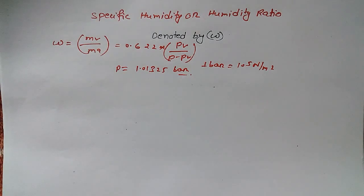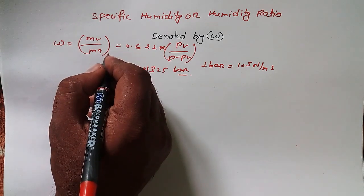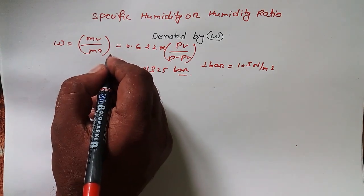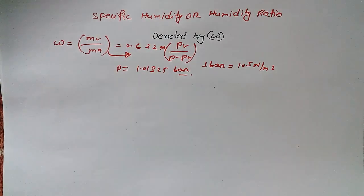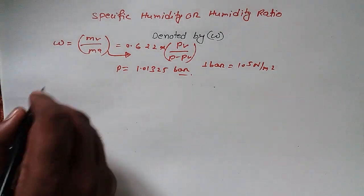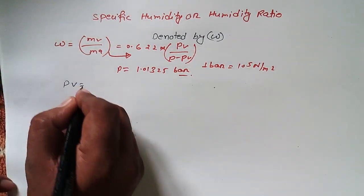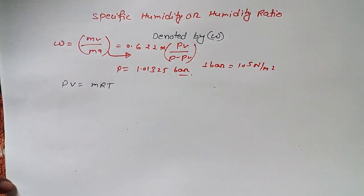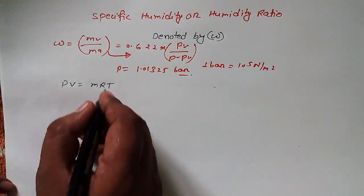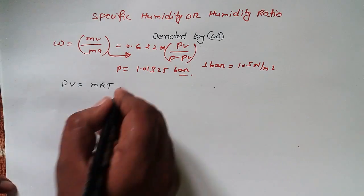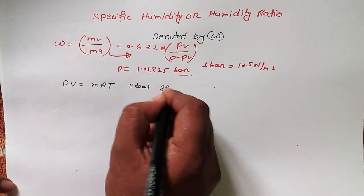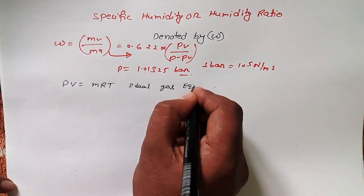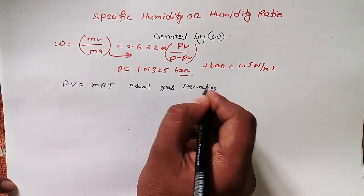Now I'm going to derive in front of you how to convert one formula into the other. We have the ideal gas equation: PV = mRT. We're going to use two equations of this form. This is the ideal gas equation — maybe you have studied it in previous chemistry class.